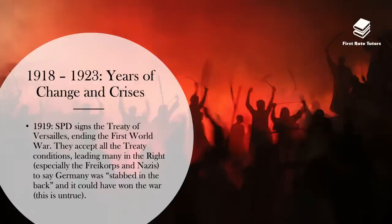Once the SPD had signed this treaty, they accepted all the treaty conditions, leading many in the right wing, especially the Freikorps, who were basically the demilitarised army, and the Nazis to say that Germany was stabbed in the back and it could have won the war, which is untrue of course. Other terms of the Treaty of Versailles were that Germany's army was restricted to 100,000 men, meaning a lot of army soldiers were out of work, and this is why the Freikorps had swelled in its ranks.